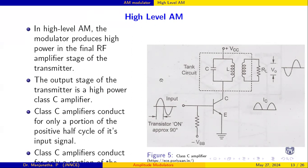To understand the high-level amplitude modulator, we first need to understand the Class C amplifier, because the output stage of the transmitter is a high-power Class C amplifier. The Class C amplifier conducts for only a portion of the positive half of its input cycle.